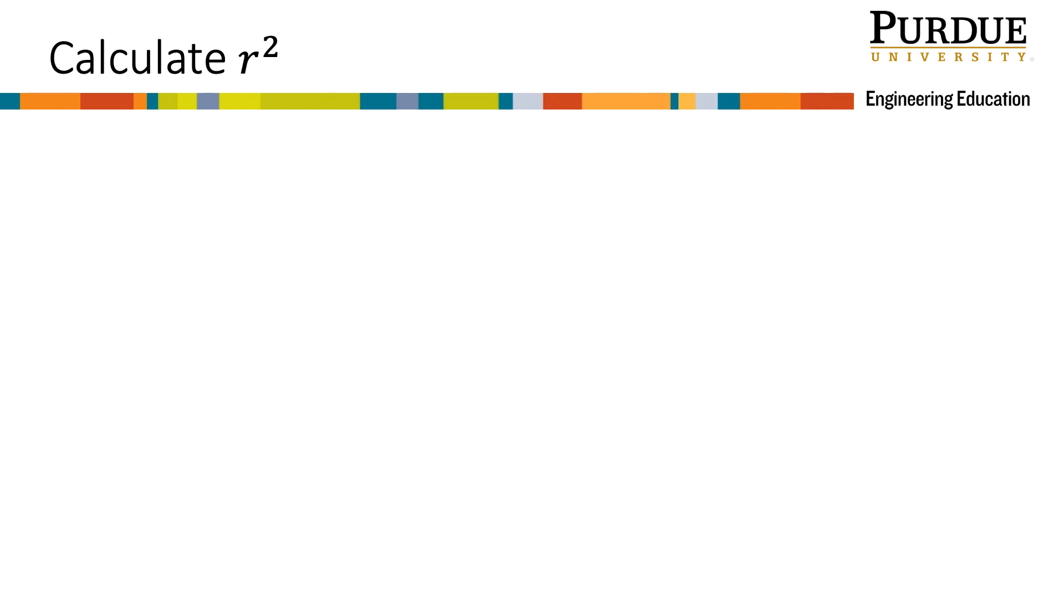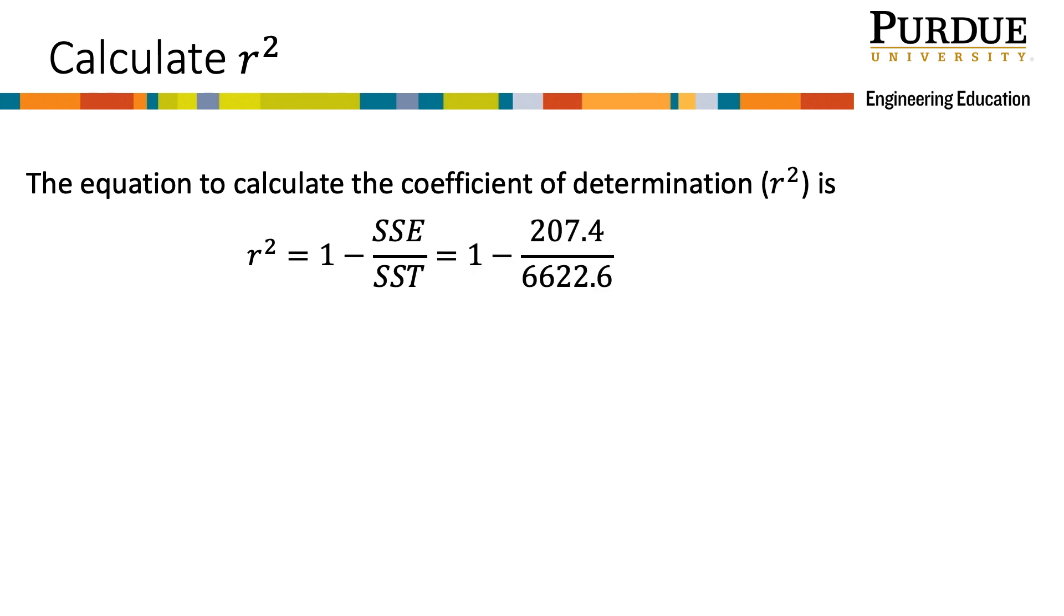Finally, we need to use the values we calculated for SSE and SST to determine our R-squared value. Remember that the equation for R-squared is 1 minus SSE divided by SST. So plug in the values from the last two slides, getting 1 minus 207.4 divided by 6622.6, which gives 0.969.